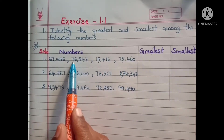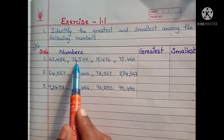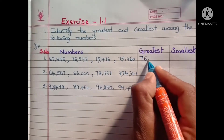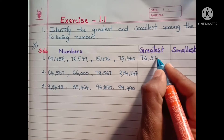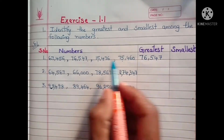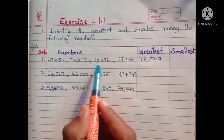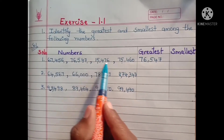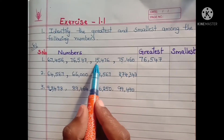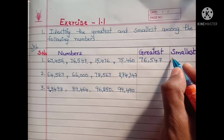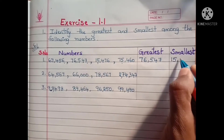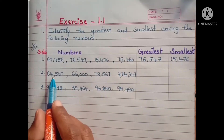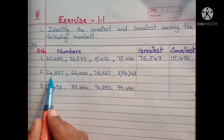Here 76,000 is the greatest number, so I am writing here: greatest number is 76,547. And we have to find out the smallest number. Among 67, 76, 15, and 75, the smallest is 15, so we write here: smallest number is 15,476.